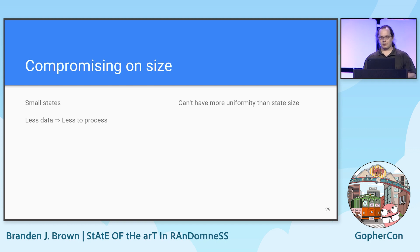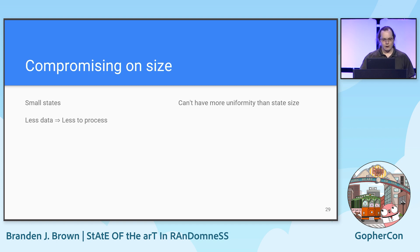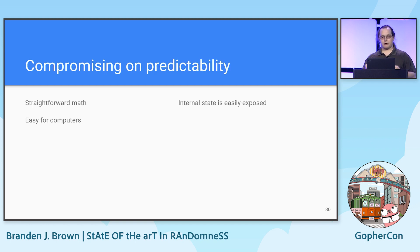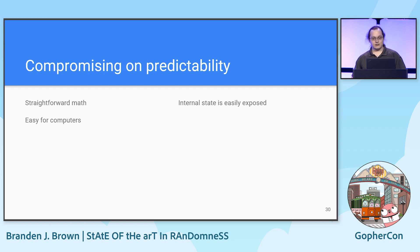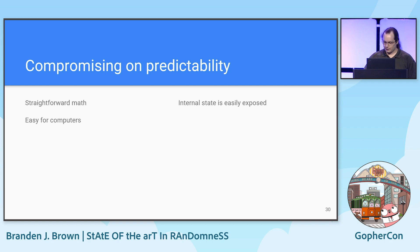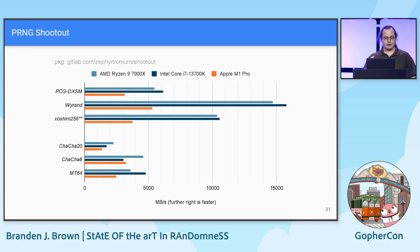They're also going to be based on really simple math. Fewer operations means less time spent operating, but it's typically easy to take just a few outputs and figure out the internal state. The point of these is really throughput.